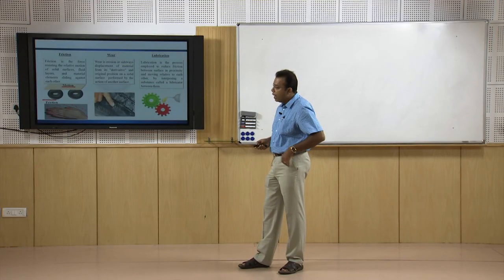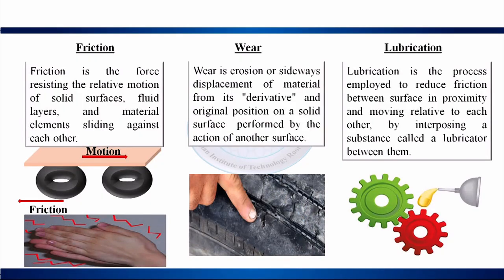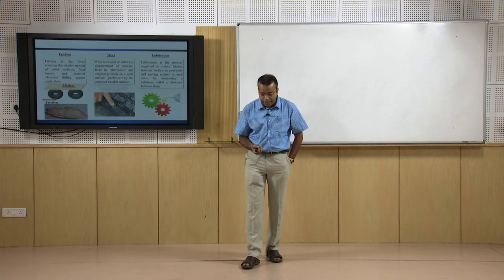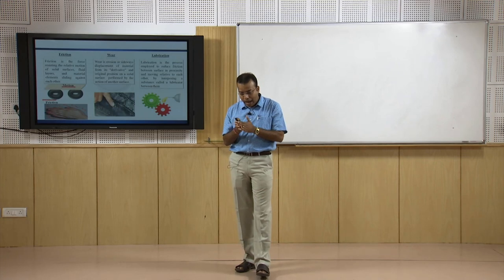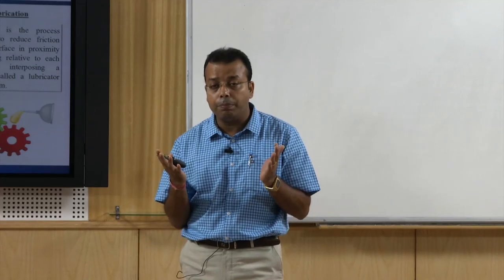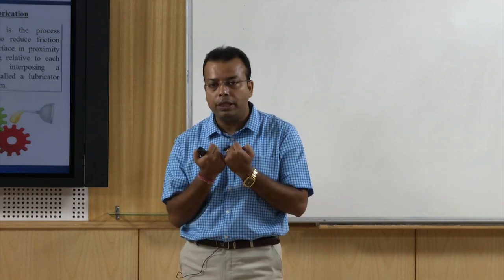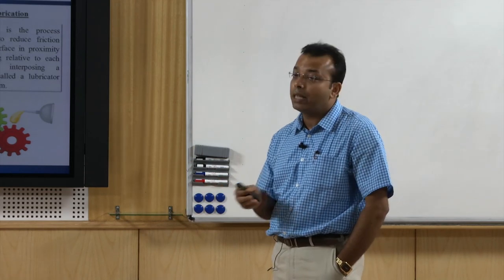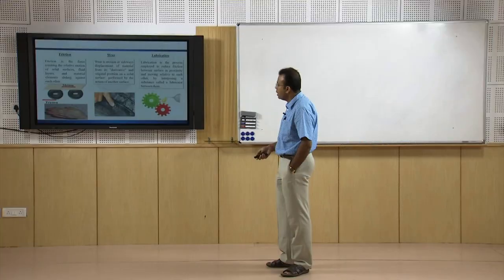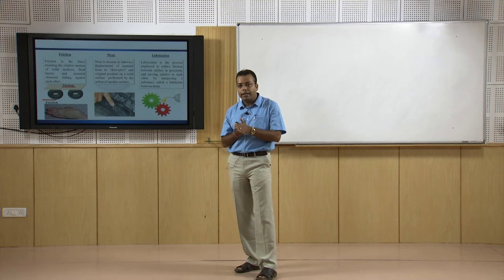Friction is the force resisting the relative motion of solid surfaces, fluid layers, and material elements sliding against each other. Whether one surface is static and the other dynamic, or both are in motion or both static, friction takes place each time — but the amount of friction differs for each case. A simple example is rubbing hands together to generate heat in cold weather.